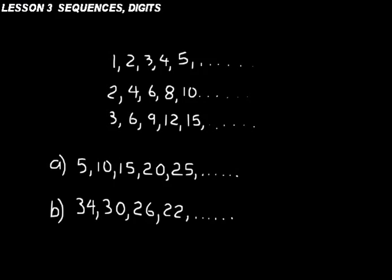If you want to pause the CD, you can, and then try to figure out what the two rules are here. So in A, we're counting up by fives, right?